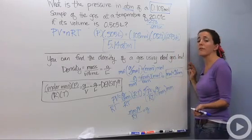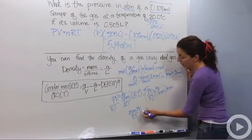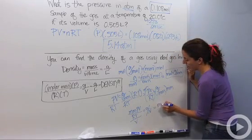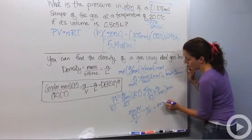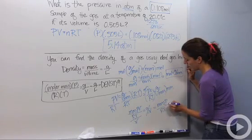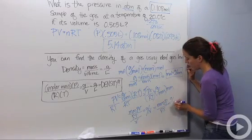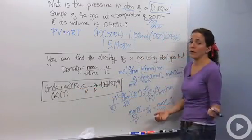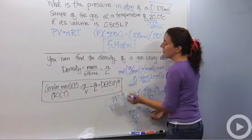And then I want to bring over my volume because volume is measured in liters. So I want to divide both sides by volume, and I get molar mass times pressure over RT equals grams over volume, which is what I have written here, which in other words is grams over liters, which is our density.